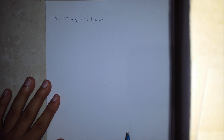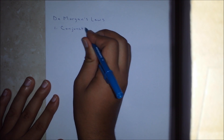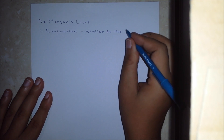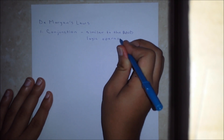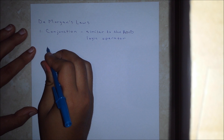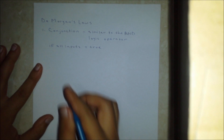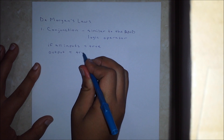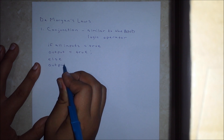First of all, we shall briefly explain both of these terms so that you can better understand what we are talking about in the video. The first term is known as the conjunction and it behaves similar to the AND operator, in the sense that if all inputs are true, then the resulting output of the function will equal true. Otherwise, the output shall be false.